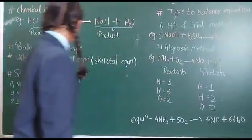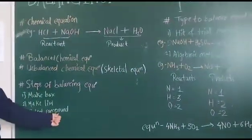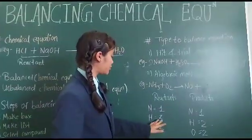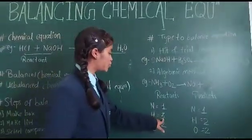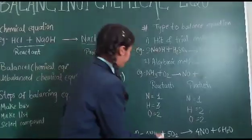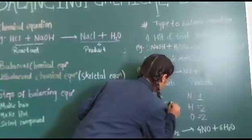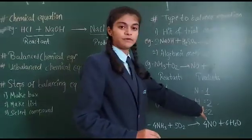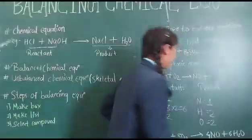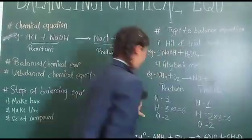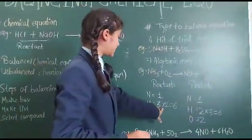Now we will see the third step which is select compound which contains maximum number of atoms. So here maximum number of atoms are of hydrogen. So it is an odd number. To make it an even, I should multiply it with 2. By multiplying 2, we get 6. So same step should be followed in product side. Multiply with 3, we get 6.